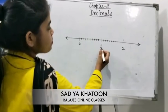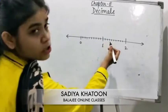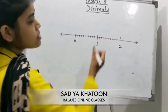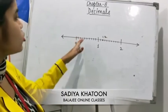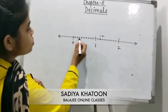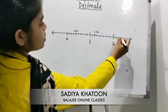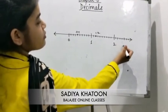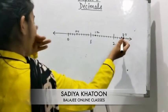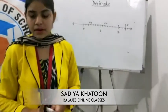This is the 1st division and this is the 2nd division, that means this is 1.2. If you have 0.4, then 0.1, 0.2, 0.3, 0.4 — this is 0.4. And similarly, 2.5 would be represented here. This is how you represent decimals on a number line.